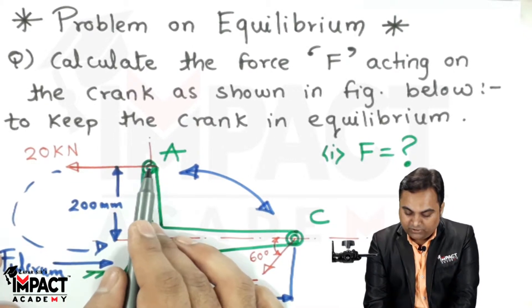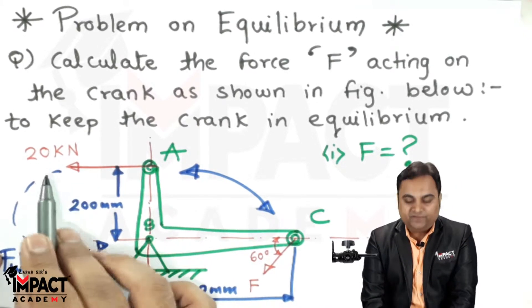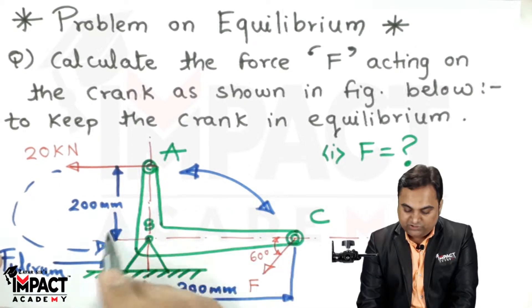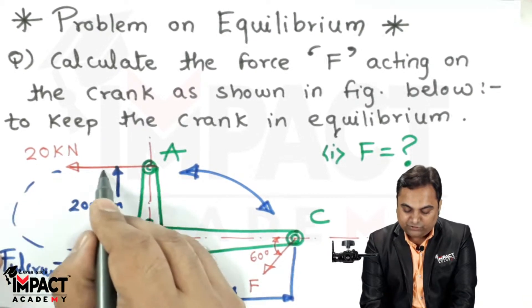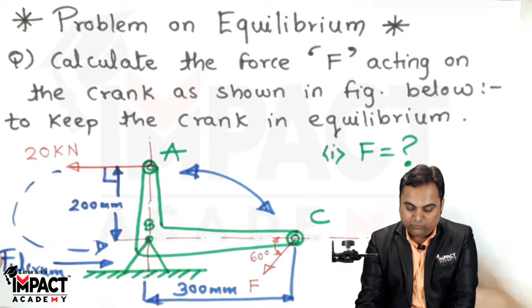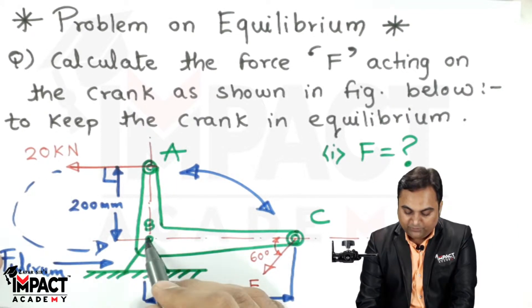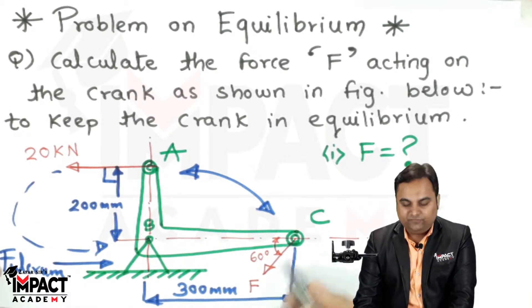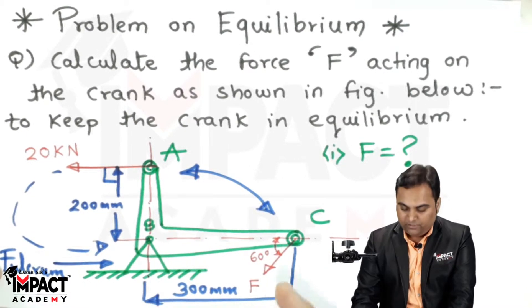At point A, 20 kN is acting. The distance from the fulcrum B is 200 mm, which is the vertical distance, and the force is horizontal. So they are perpendicular to each other, producing a moment at point B. Similarly, force F also produces a moment, but this F is inclined at an angle of 60 degrees.